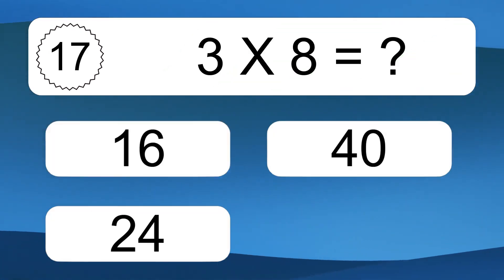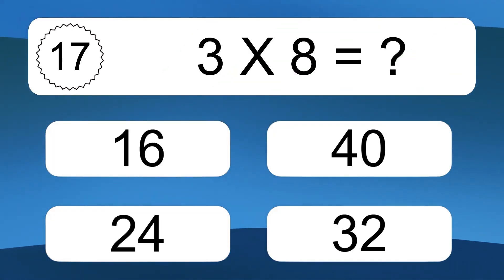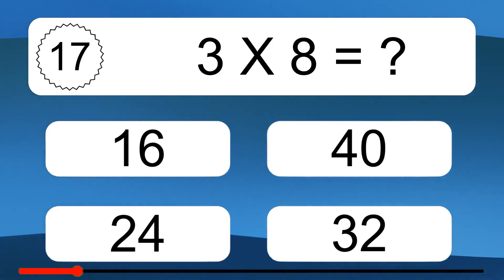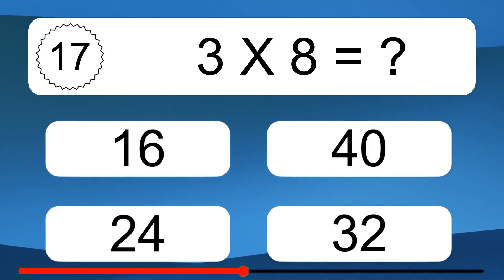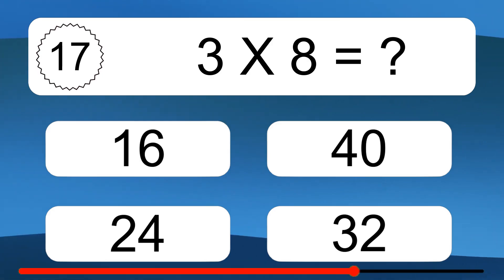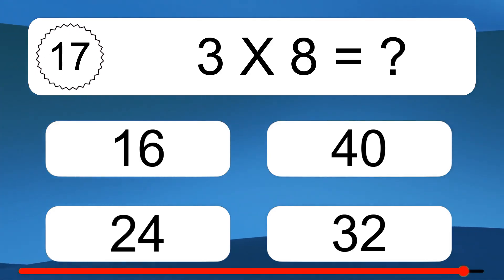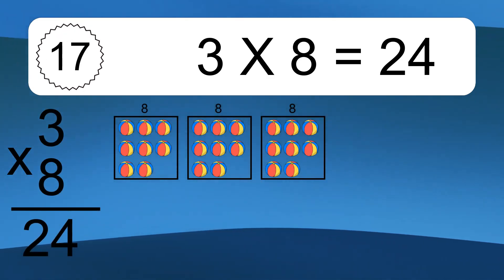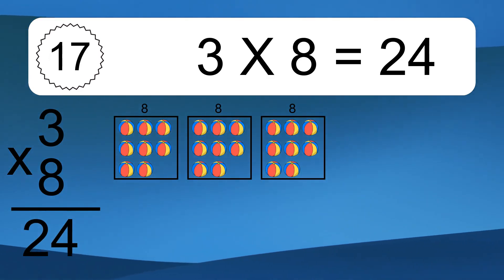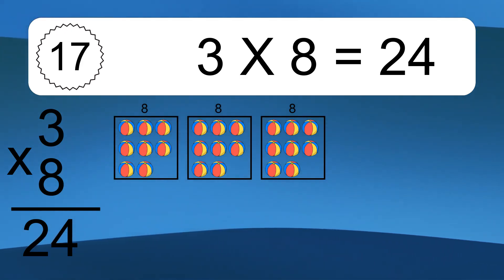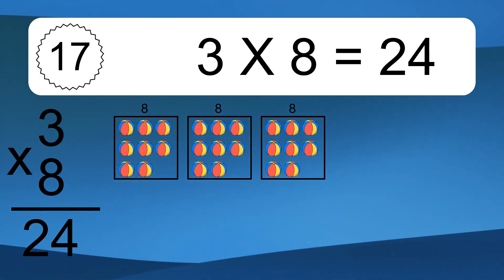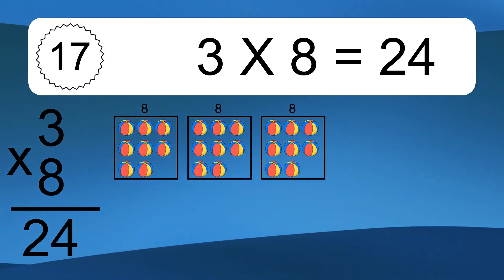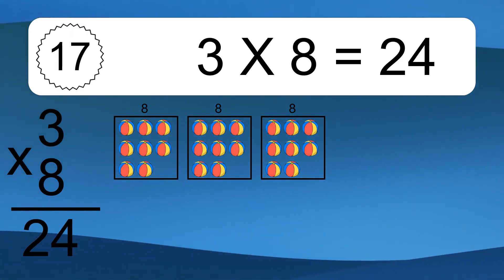3 times 8 equals what? 3 times 8 equals 24. We have 3 boxes, and each box has 8 colorful balls inside. If you count all the balls in all the boxes together, you will have 3 times 8 balls. This equals 24 balls.